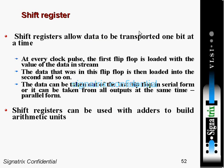Coming to shift registers. Shift registers allow data to be transported one bit at a time. At every clock pulse, the first flip-flop is loaded with the value of the data in the stream, and the data that was in this flip-flop is then loaded into the second, and so on. The data can be taken out of the last flip-flop in serial form, or it can be taken from all outputs at the same time in parallel form. Shift registers can be used with adders to build arithmetic circuits, and are used in ALUs with the help of adders.